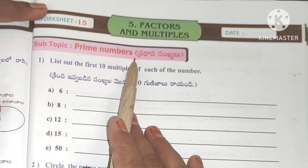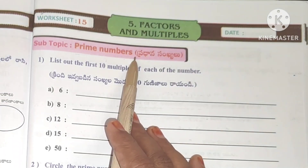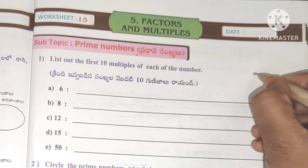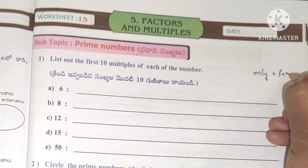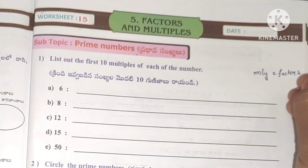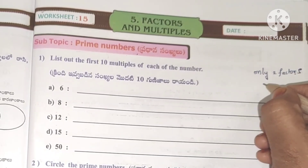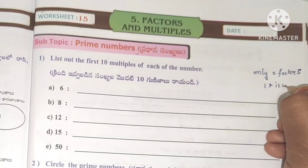Worksheet 15 will be on prime numbers. In the previous video, I explained prime numbers. The numbers which have only two factors — one and the number itself — are called prime numbers.